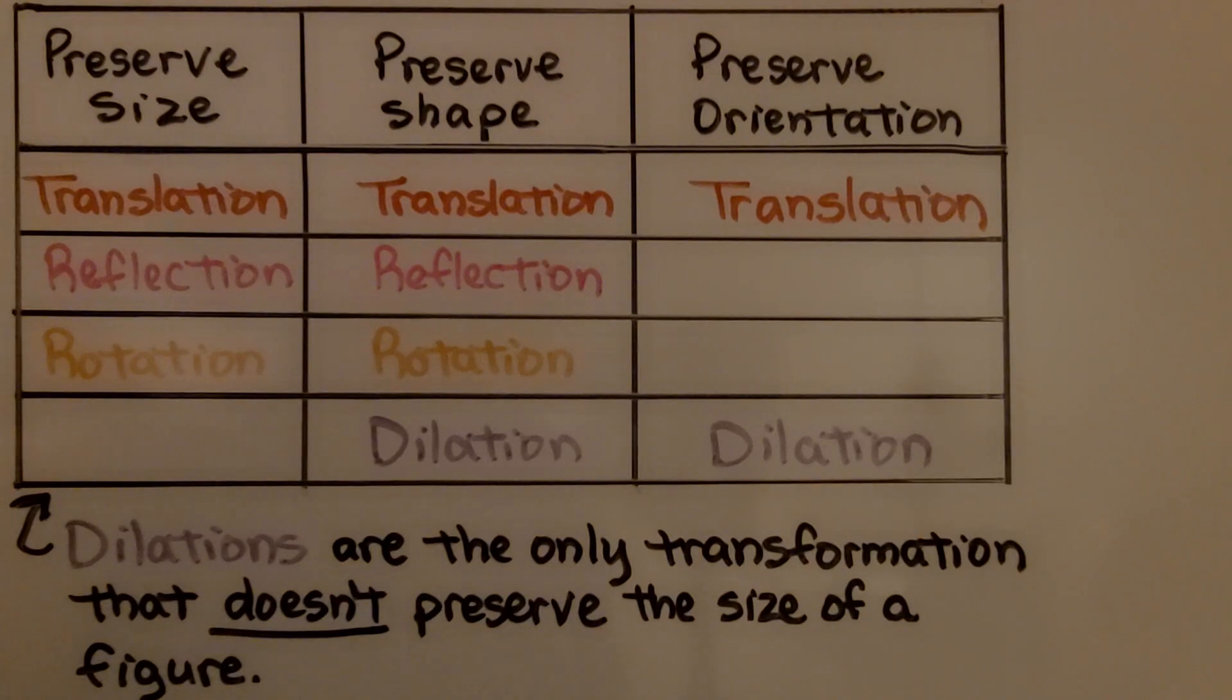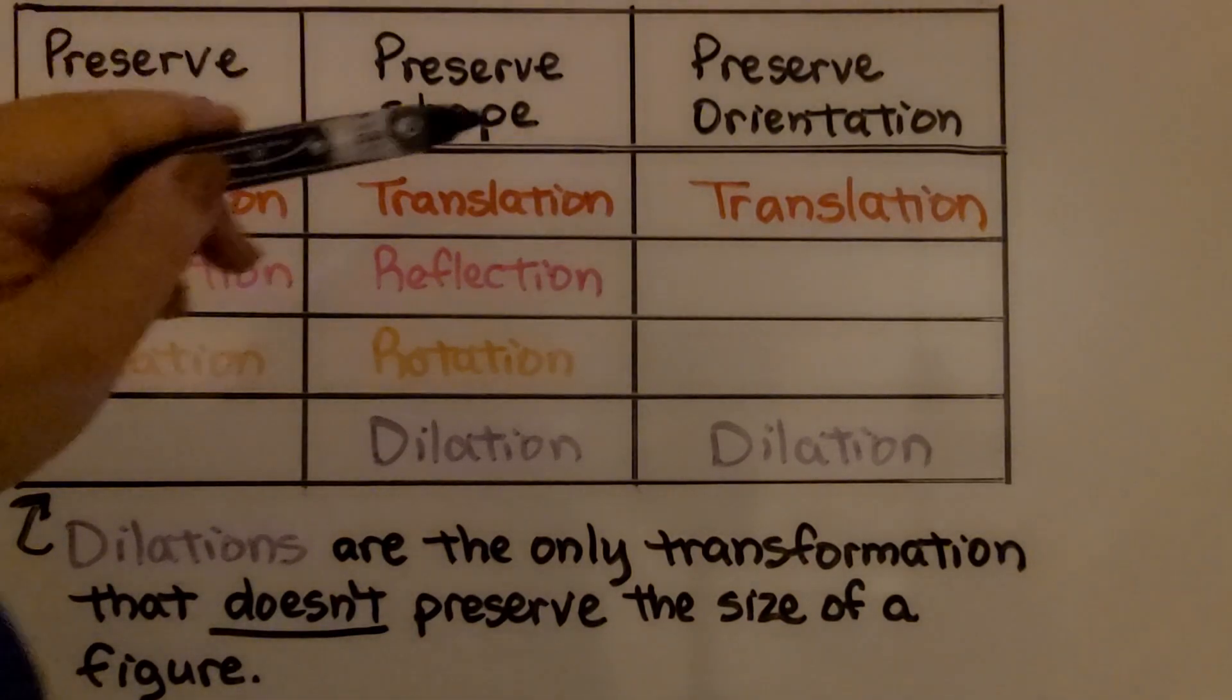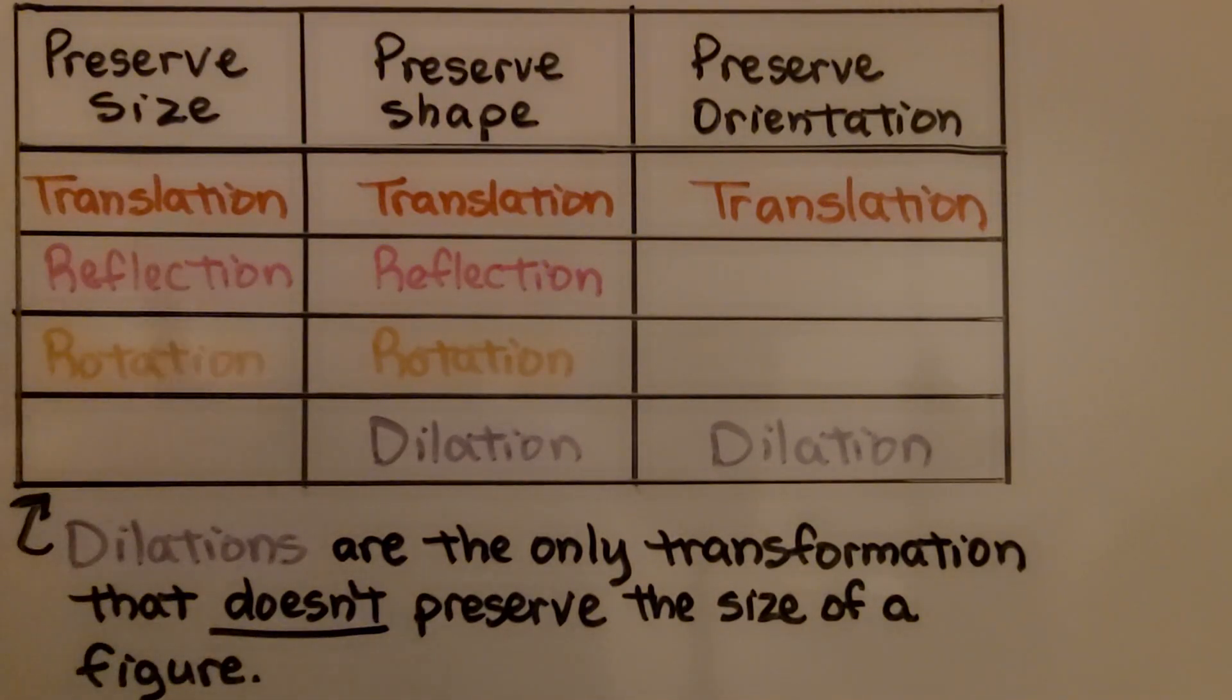I made a table to show which transformation preserves size, shape, and orientation. If you look, translation does all of that. Reflection only does size and shape. Rotation only does size and shape. But look at dilation. Dilations are the only transformation that doesn't preserve the size of the figure.